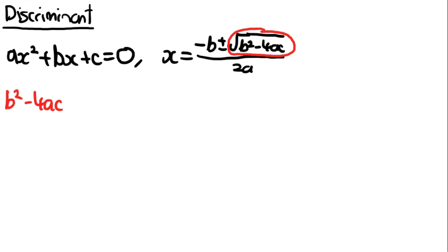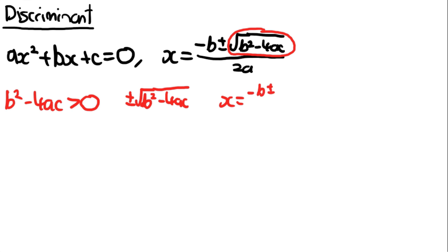If b squared minus 4ac is bigger than 0, the square root of b squared minus 4ac gives us the traditional plus or minus result. The quadratic formula works perfectly — minus b plus or minus the square root of b squared minus 4ac over 2a — and we get two values of x, so two roots, because of the plus and the minus.